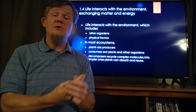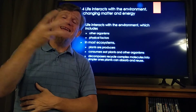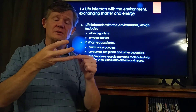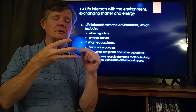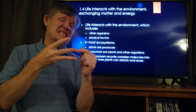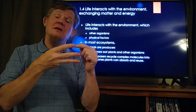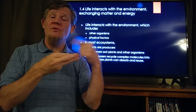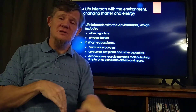So most ecosystems have three different classes of organisms: producers making all the food, consumers eating the producers, and decomposers recycling all of the waste products back into the ecosystem to keep it running.